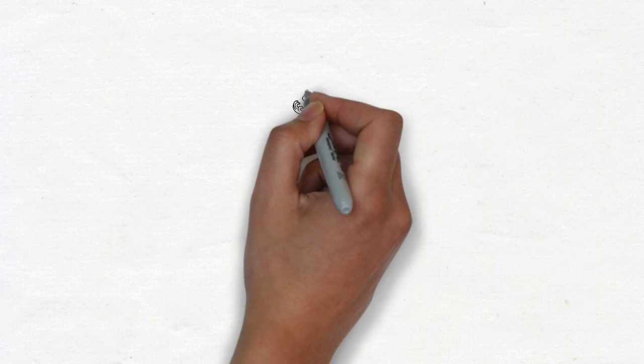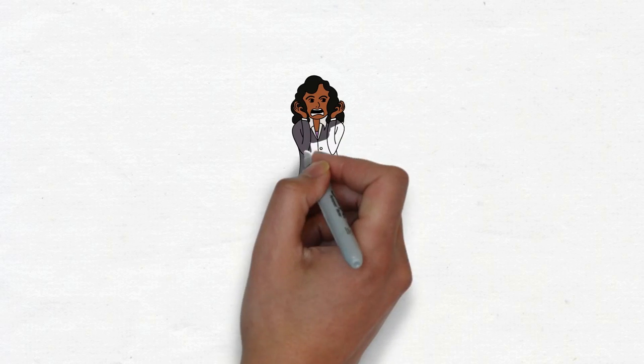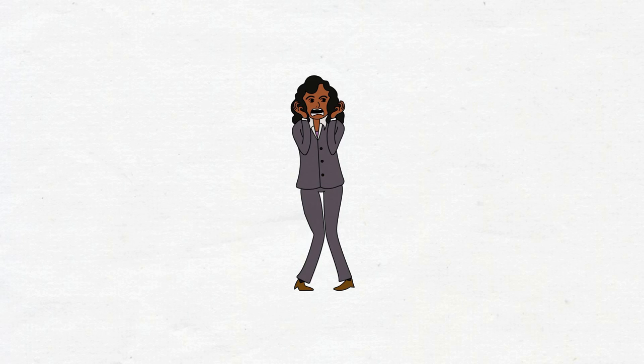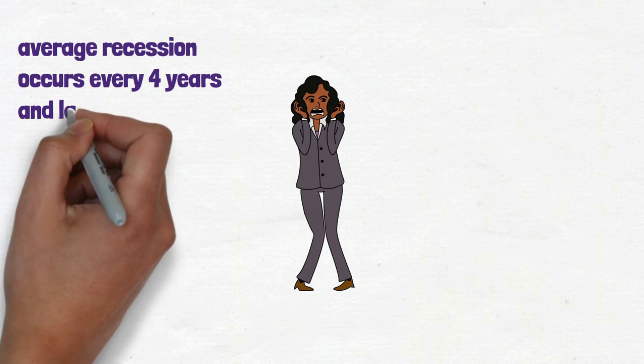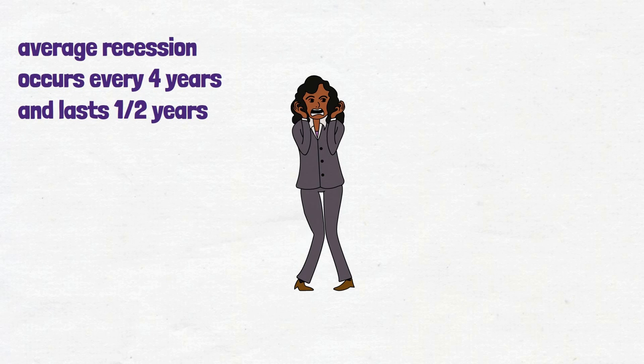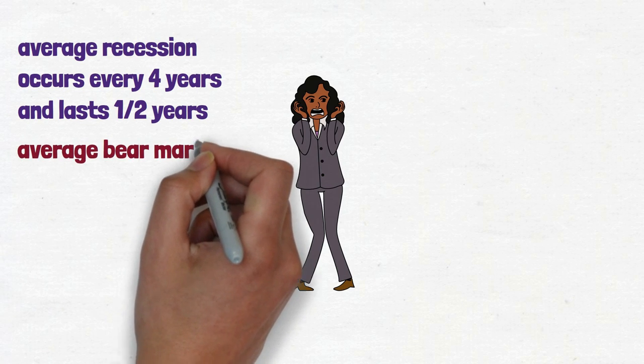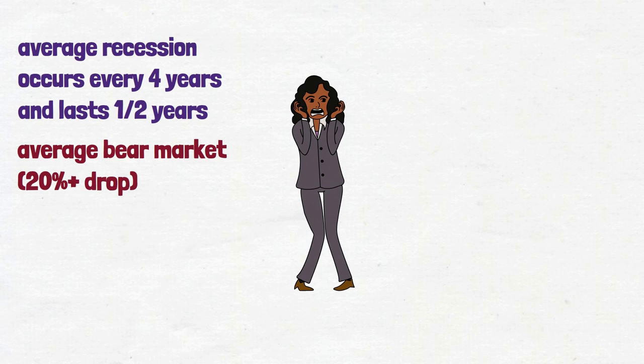This way you can enjoy every dollar you spend much more. When the stock market crashes or there is an economic recession, it may seem as if everything you know has come to an end. Will everything go back to normal? According to Acorns, the average recession occurs about every four years and lasts for one and a half years.